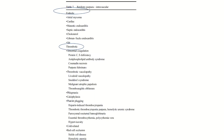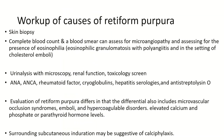Focusing now on intravascular causes of retiform purpura: embolism usually results from atrial myxoma, cardiac emboli, endocarditis, or cholesterol embolism. Thrombosis usually results from deficiency of protein C and S or purpura fulminans.